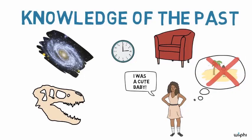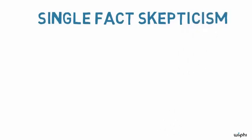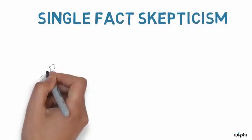In a more restricted local skepticism, we can raise skeptical worries about knowledge of single facts just by thinking of some possible way in which things might fail to be as they appear.